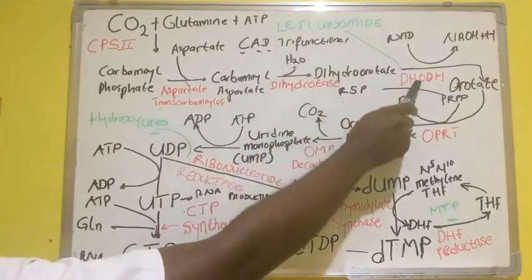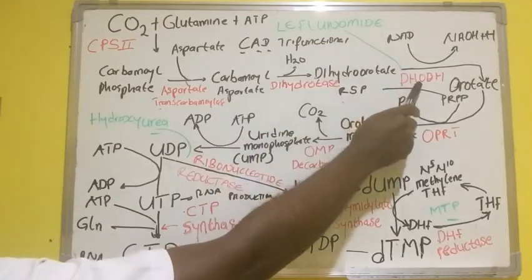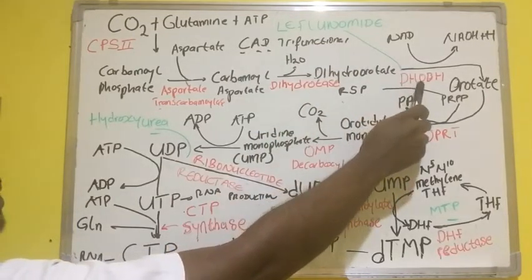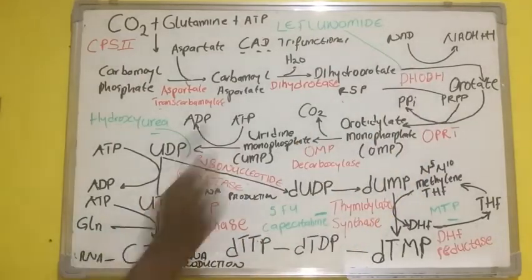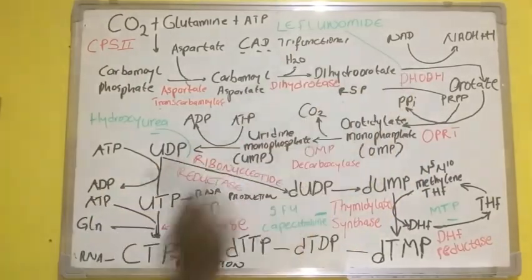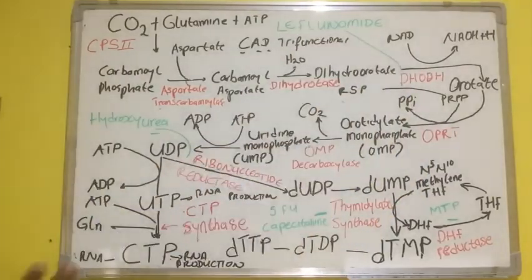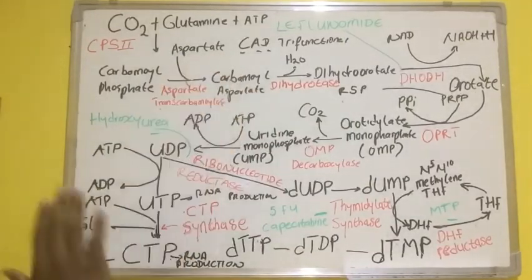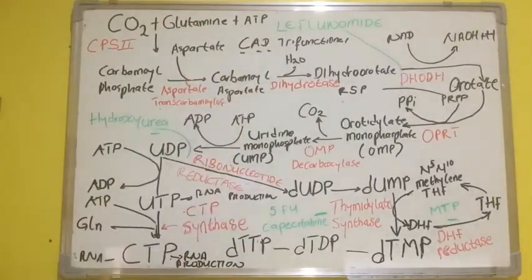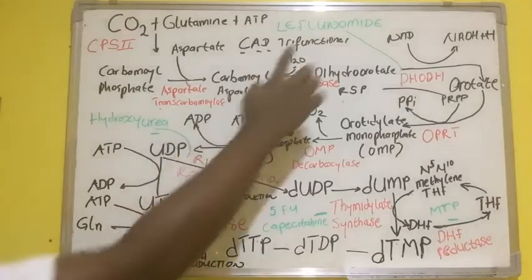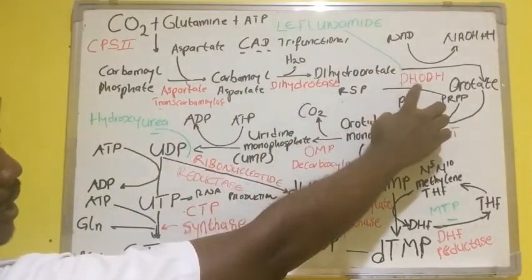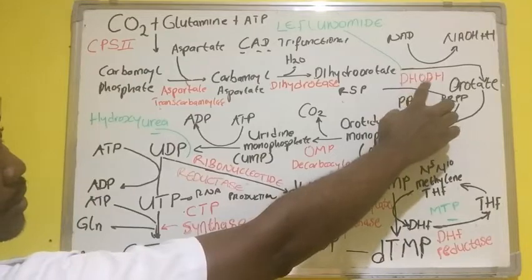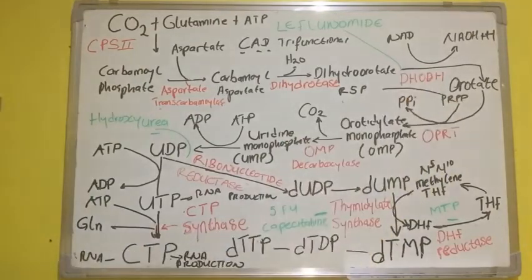There are some drugs that hinder steps in pyrimidine biosynthesis. Leflunomide hinders dihydroorotate dehydrogenase. Hydroxyurea hinders ribonucleotide reductase, and if ribonucleotide reductase is blocked by hydroxyurea, it will affect the production of DNA because these steps in the DNA synthesis pathway will be hindered.